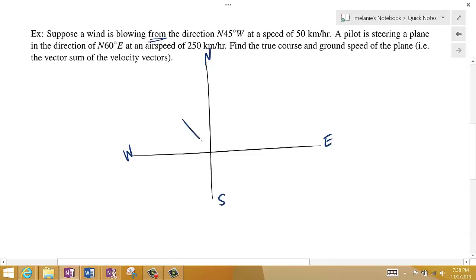So this vector for the wind is right here. A pilot is steering a plane in the direction of north 60 degrees east. So I start at north and I go 60 degrees in the direction of east. And the airspeed is 250 kilometers per hour, so I'm going to make it longer than this one. Not to scale, but this is 50, so this should be five times as long. It won't be because my picture is off a little bit, but this gives us a basic idea. And this is the velocity of the plane. So the wind is blowing from this direction, and the pilot is steering the plane in this direction.